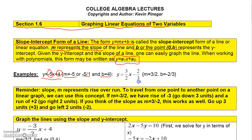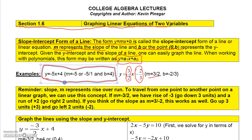Another example — you could have fractions: y equals 3/2 x minus 2. The coefficient of x is 3/2, so the slope is 3/2, and the y-intercept would be the point (0, negative 2). We can graph this line simply by knowing the slope is negative 5 over 1 and the y-intercept is 4.